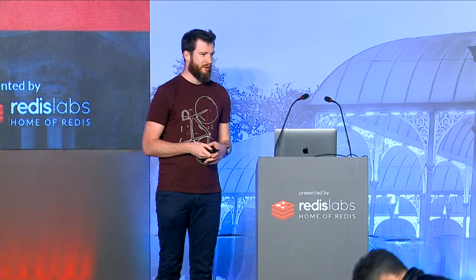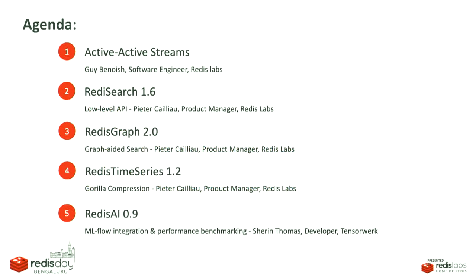Let's crack on. We do have some slides, 321 more or less to get through. This talk consists of five topics. The first talk will be from Guy, who will talk about Active Streams that we announced this morning. Then I will talk about Redis Search, Redis Graph, and Redis Time Series. And then at the end, Sharon will come on stage to talk about Redis AI, mainly about the integrations and also the performance benchmarking.